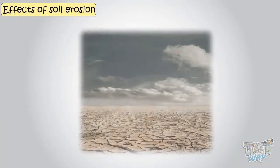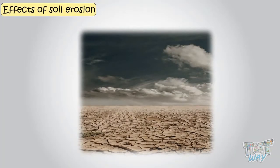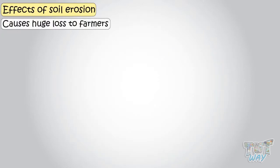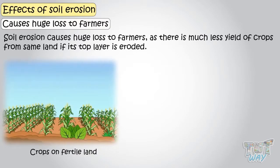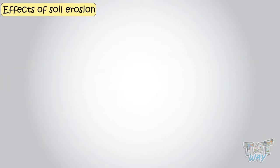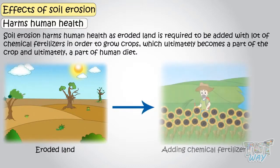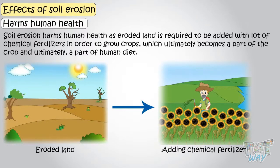Now let's see the effects of soil erosion. First of all, it degrades the quality of soil, making it less fertile or not fertile at all. It causes huge loss to farmers as there is much less yield of crops from the same land if its top layer is eroded. It also harms human health, as eroded land requires a lot of chemical fertilizers to grow crops, which ultimately become part of the crop and human diet and affect our health.